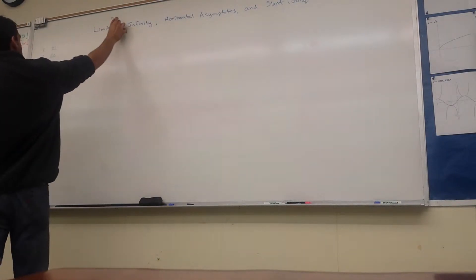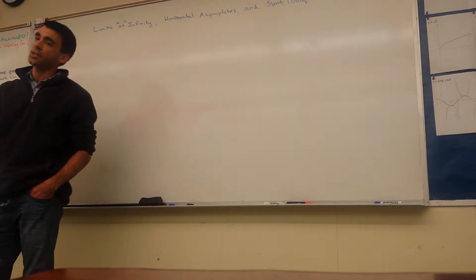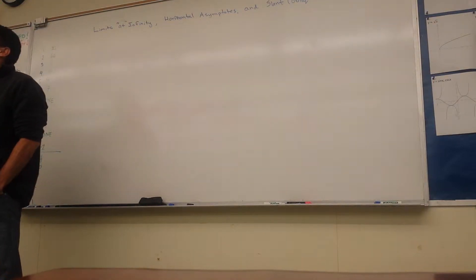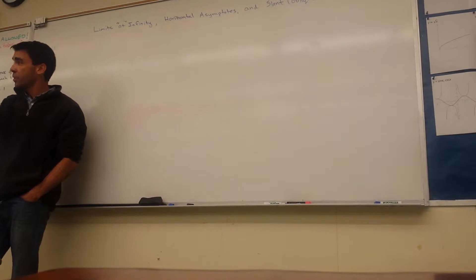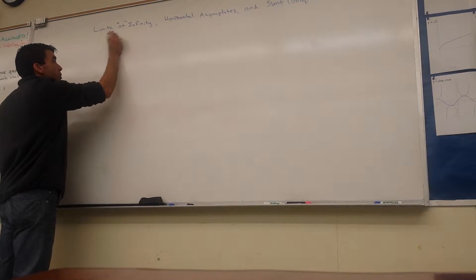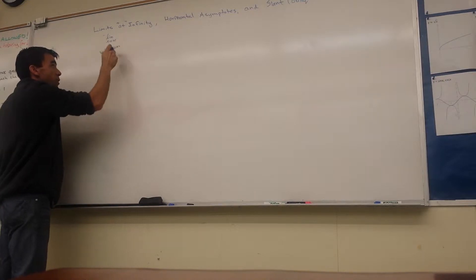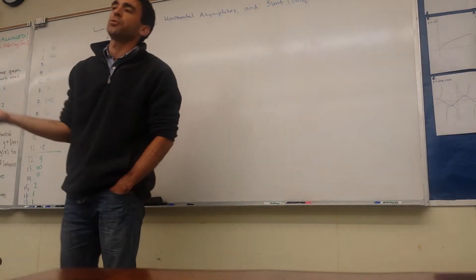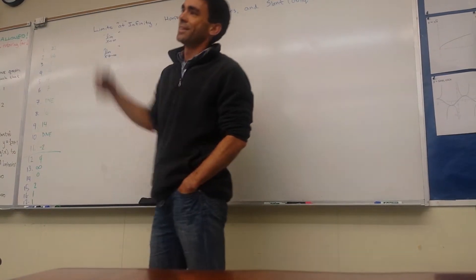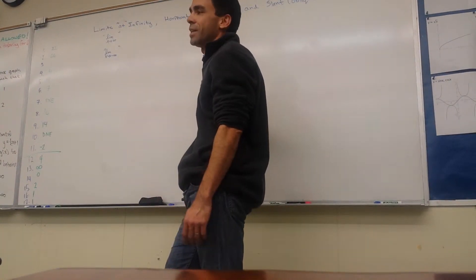So what does this mean, limits at infinity? It's kind of an oxymoron, because you can't actually be at infinity, but it just means that the x under the limit is going to infinity. So this phrase means lim as x goes to infinity, or lim as x goes to negative infinity. We call those limits at infinity, even though you can never actually go to infinity and say, I'm at infinity.